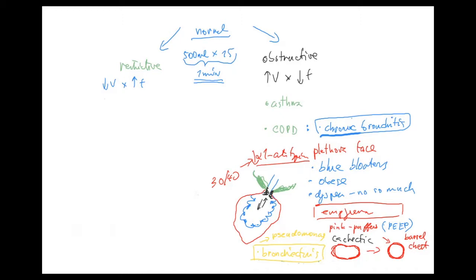In all these cases, the lungs get less elastic and thus restricted. Remember: anything that makes the lungs heavier — like being full of water — or any fibrotic process will cause them to lose their elasticity and therefore their compliance as well. So: less elastic means also less compliant.